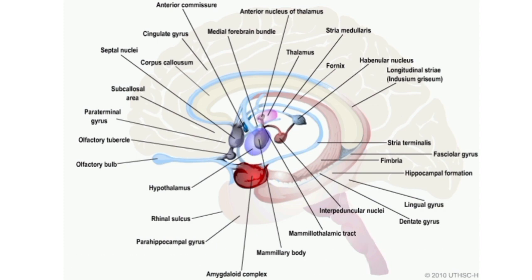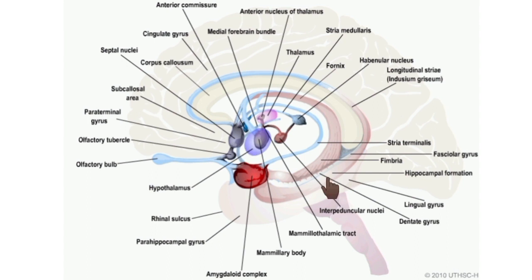The connections of the limbic system are complex. The fornix includes fibers connecting the hippocampus and septal nuclei with the mammillary body, and also connects the hippocampus with the hypothalamic nuclei. The lateral hypothalamus receives afferent fibers from the hippocampus, the septal nuclei, the olfactory tubercle, the head of the caudate nucleus, the piriform area, and the periamygdala area.